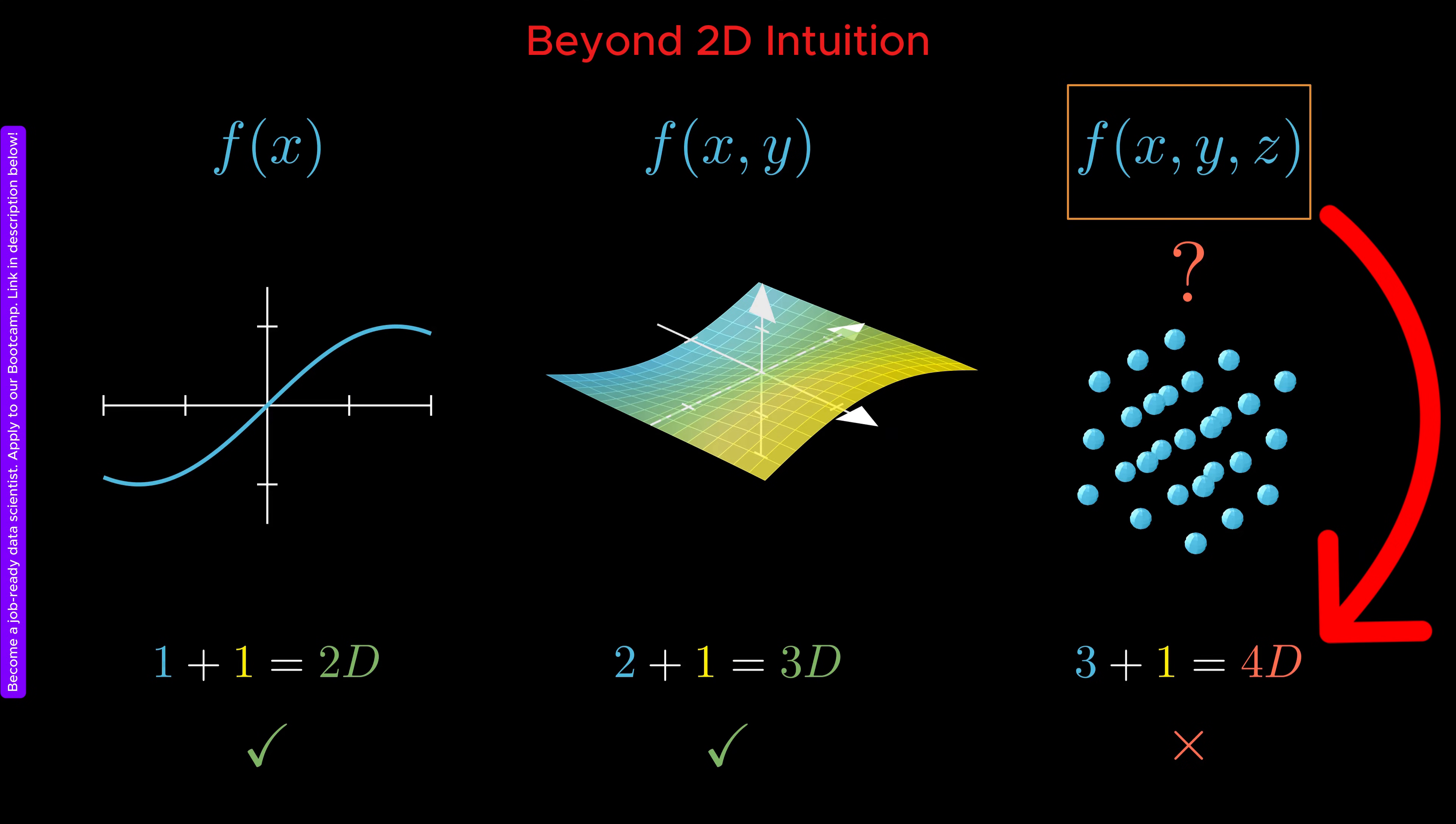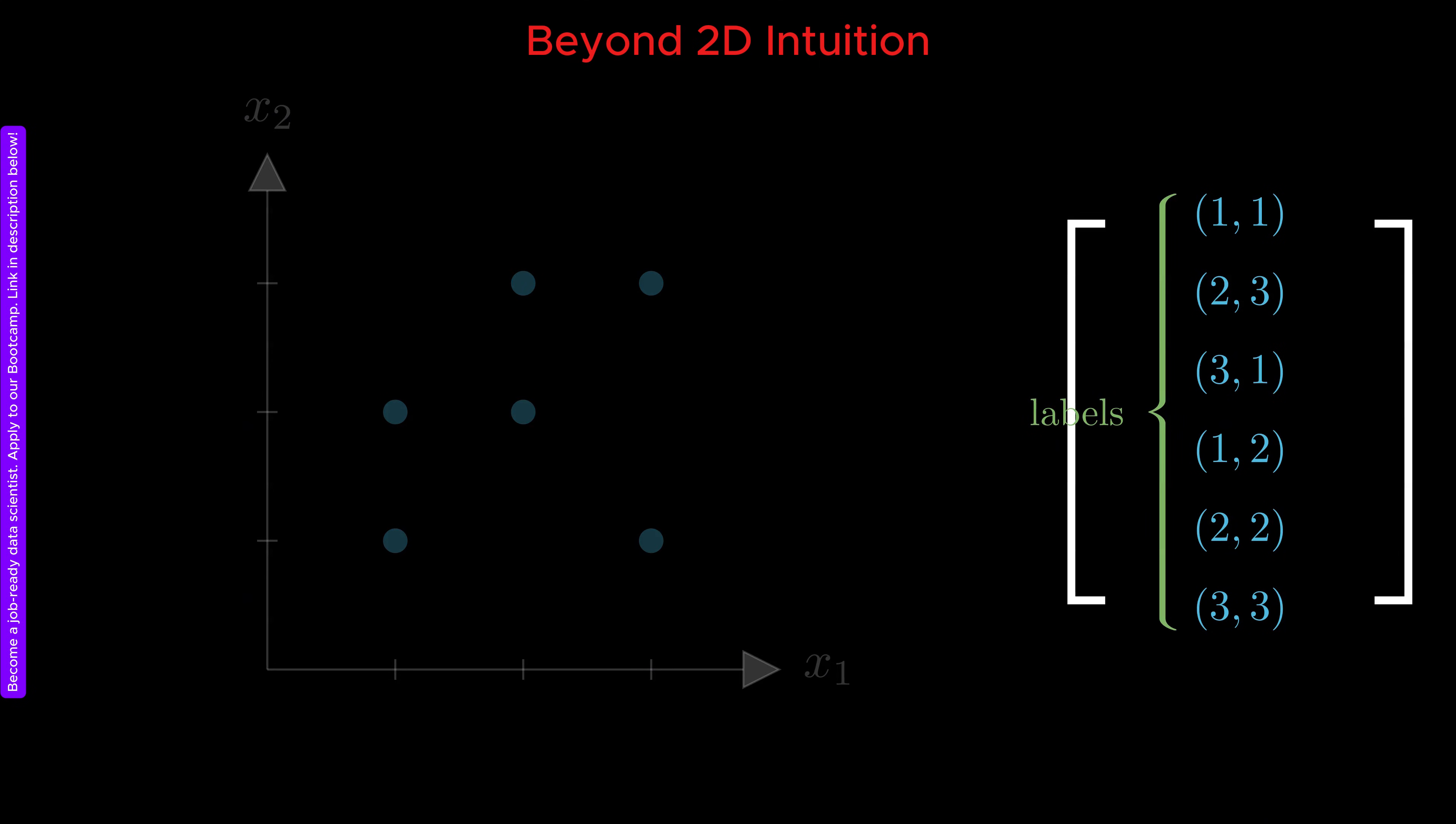So let us go back and rethink the process. Instead of thinking of x sub 1 and x sub 2 as spatial coordinates, we can merge them into a single object. We can create a list where each element is a tuple containing both x sub 1 and x sub 2. Each tuple can be interpreted as a label rather than a numerical coordinate.